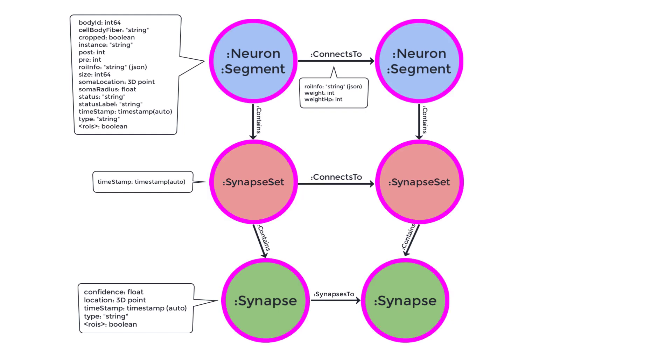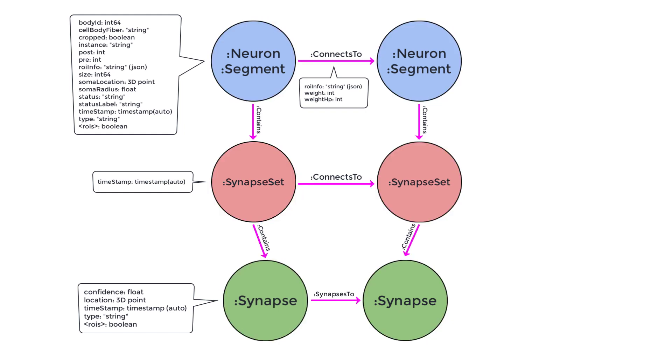The circles represent nodes, the arrows represent relationships between nodes, also called edges, and the rectangles contain properties of the nodes and relationships they point to.